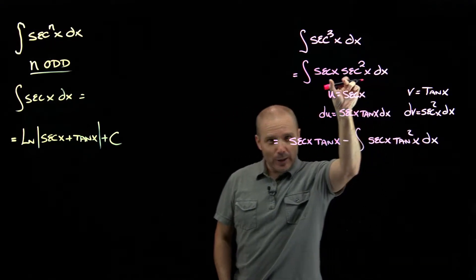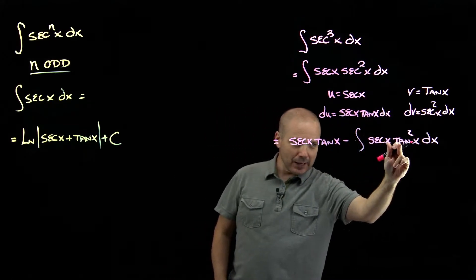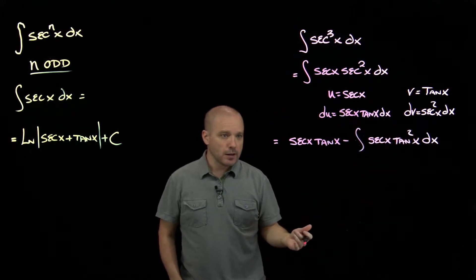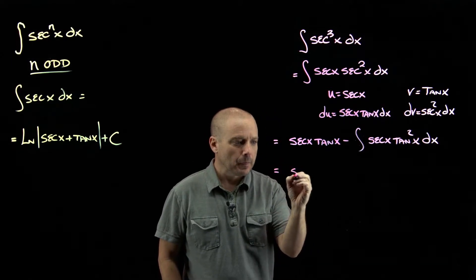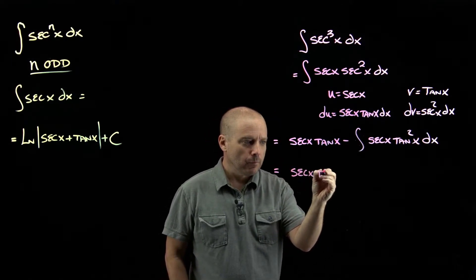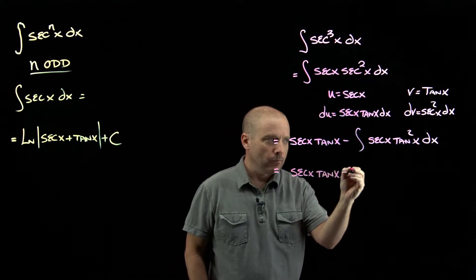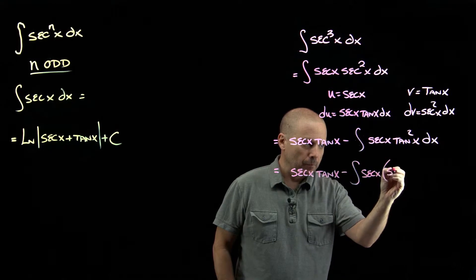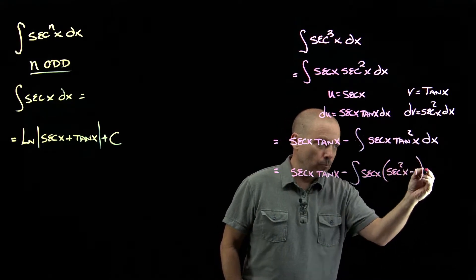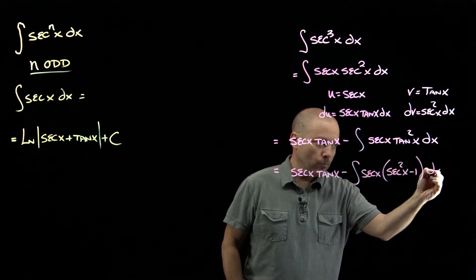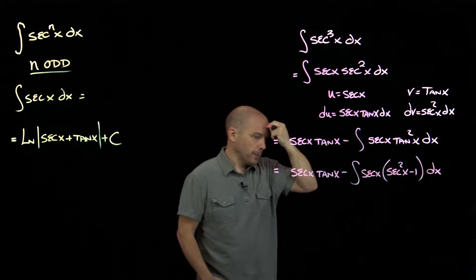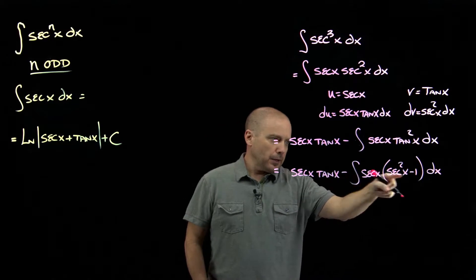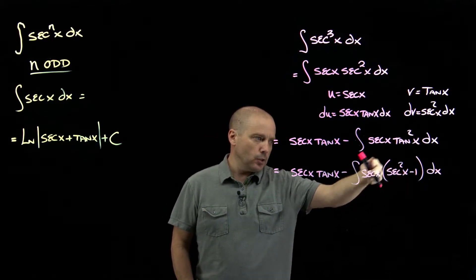But now we wanted to do that Pythagorean identity. Now is the time to do it. So we're going to use tangent squared is secant squared minus one, and now I'm going to distribute that secant so I'll have a secant cubed minus secant.